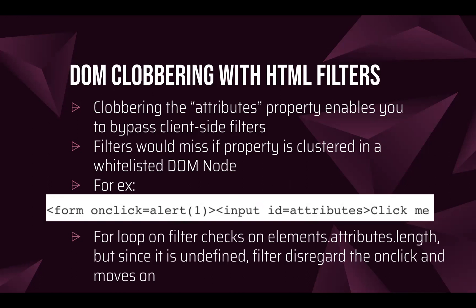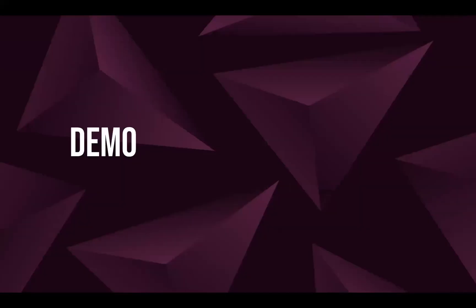Some basic HTML filters have a for loop that checks elements.attributes.length. But since attributes.length is undefined because of the input id, the filter disregards that onclick and just moves on — because how do you loop from index zero to undefined? You basically just skip it. That's why we're able to clobber the DOM even with basic HTML filters in place. Now I'm going to do a quick demo.